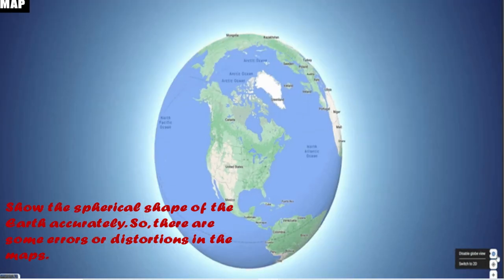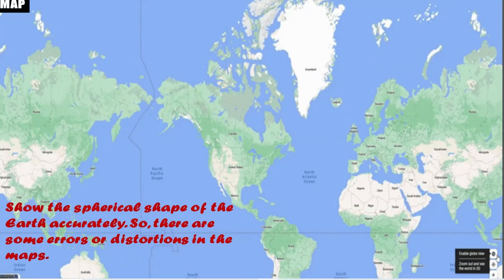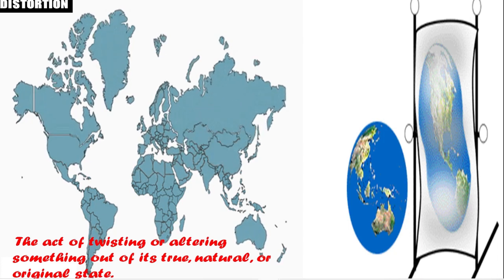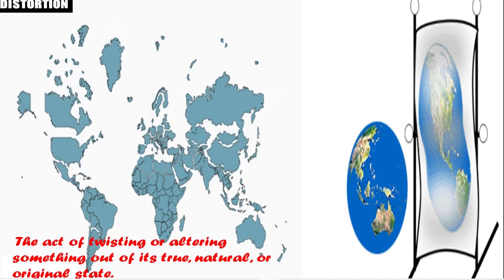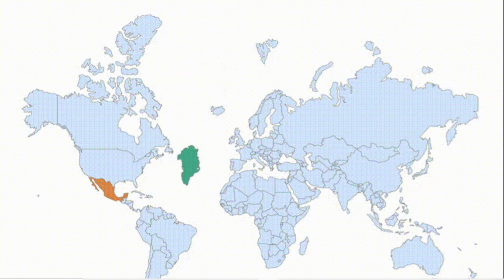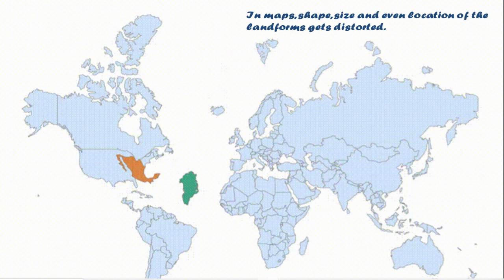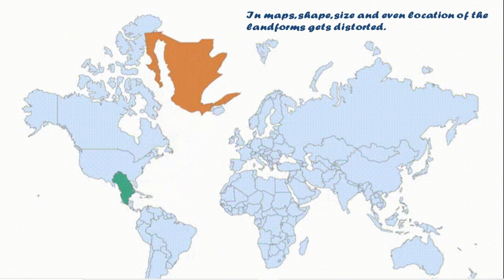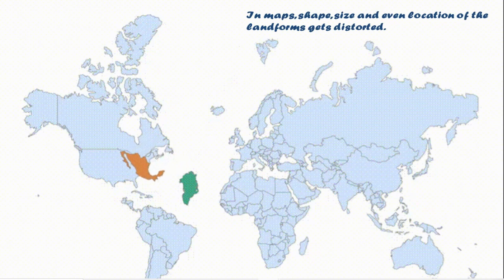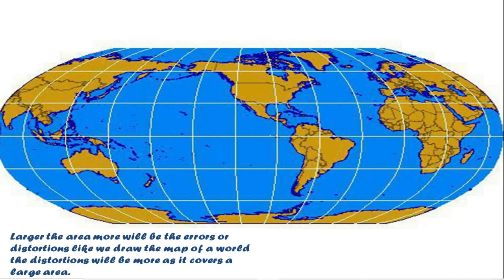We cannot completely flatten out the spherical shape of the earth and show it accurately on a flat surface, so there are some errors or distortions in maps. A distortion is the act of twisting or altering something out of its true, natural, or original state — a change or exaggeration that makes something appear different from how it really looks. There can be distortions in the shape, size, or even location of landforms.